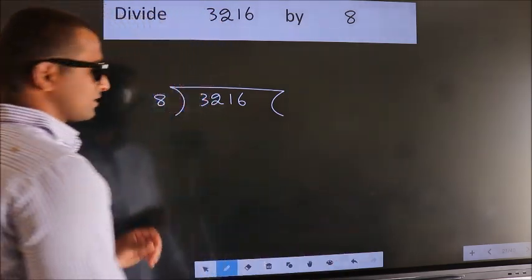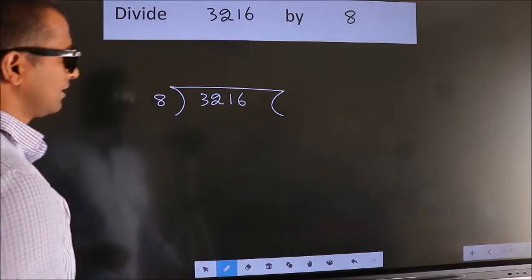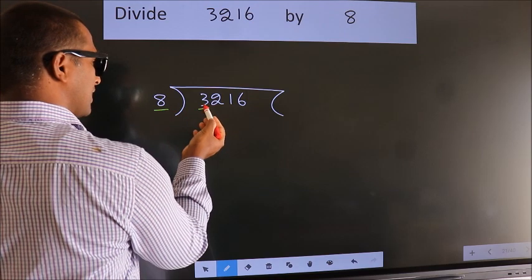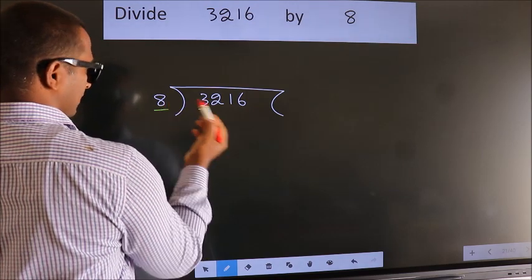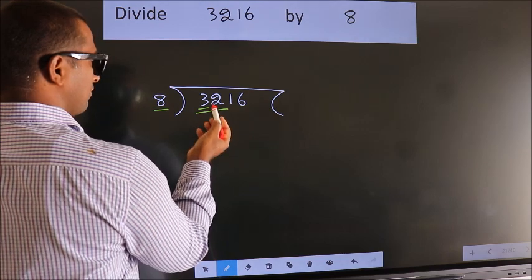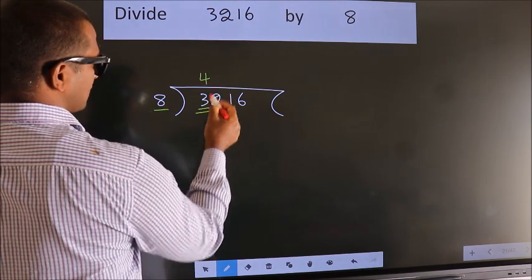This is your step 1. Next, here we have 3. Here 8. 3 smaller than 8. So we should take 2 numbers, 32. When do we get 32? In 8 table. 8 fours 32.